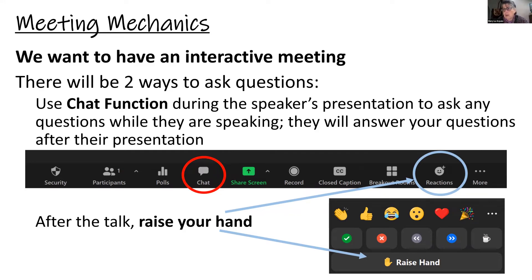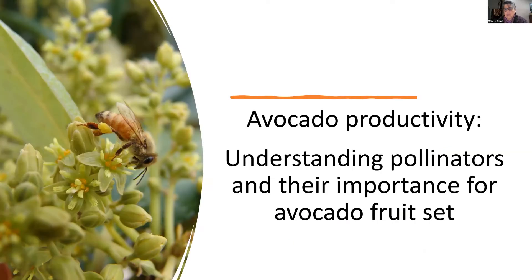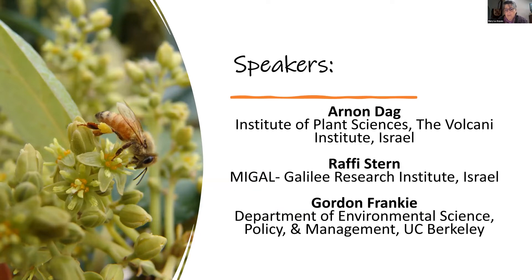Today's topic continues the theme of avocado productivity. This meeting is about understanding pollination, pollinators, and their importance for avocado fruit set. We're very happy to have three distinguished speakers: two from Israel — Arnon Dag and Rafi Stern — and Gordon Frankie from UC Berkeley, who has been working in Ventura County for many years. They will all talk about different aspects of pollinators.